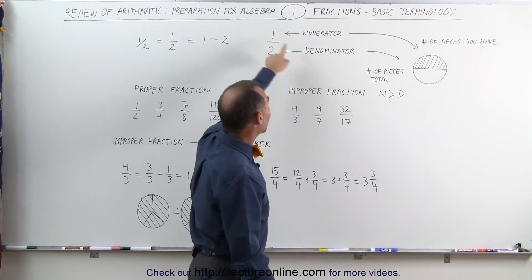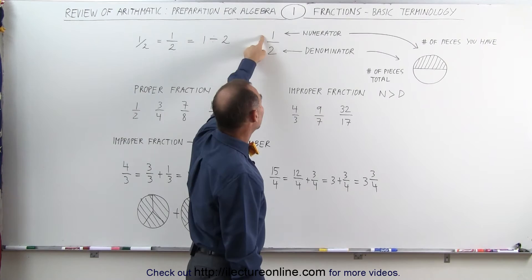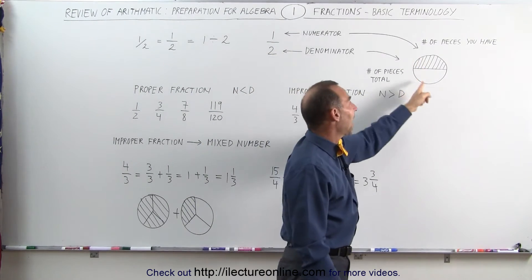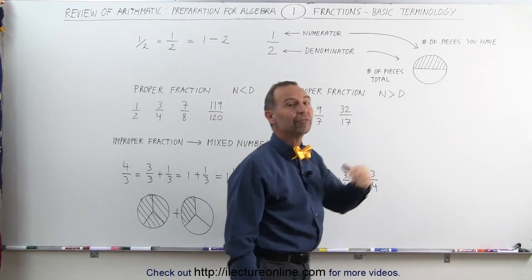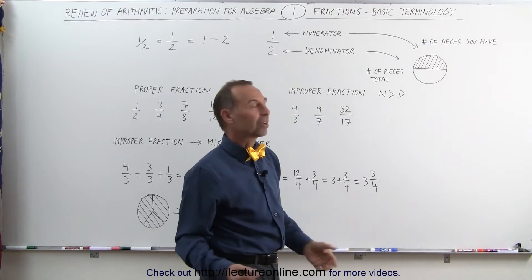The number at the top tells you how many of those pieces you have. In this case, you have one of the two pieces, so you have half, or one divided by two, or one out of two pieces—and that's what a fraction really is.